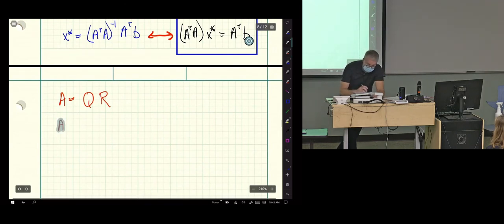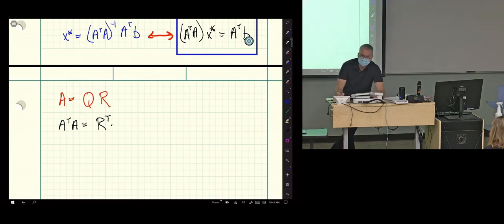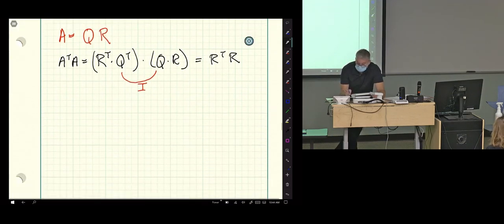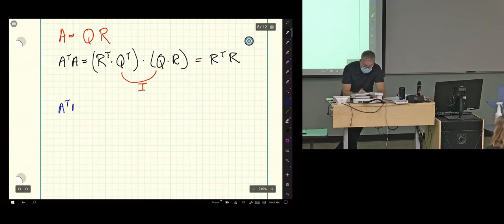What is A transpose times A? A transpose, remember the Gilbert Strang mnemonic. If you put on your socks then your shoes to reverse the process. You first take off your shoes and then you take off your socks. So there's that. A transpose times A, Q dot R. This is an identity. So this is R transpose times R.